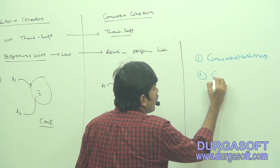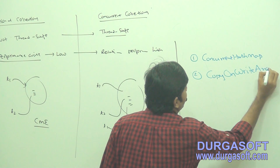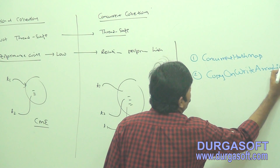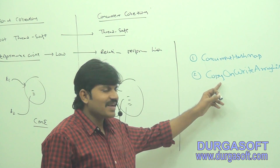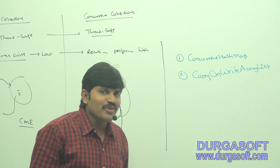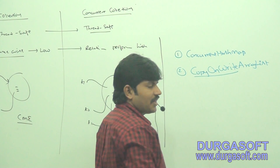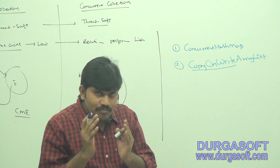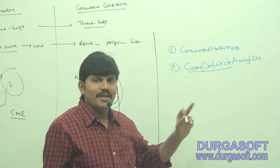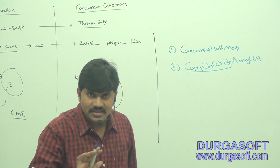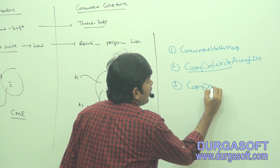The second concurrent collection is CopyOnWriteArrayList. Why do they use the word 'CopyOnWrite' instead of just 'concurrent'? There is a big reason for that which I will explain in detail. The total behavior of this ArrayList is based on the copy-on-write property. The third concurrent collection is also coming up next.